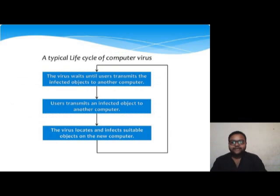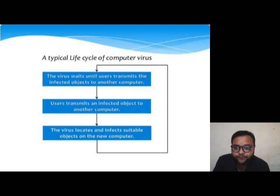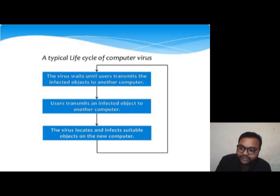A typical life cycle of computer viruses: first, the virus waits until the user transmits the infected object to another computer; second, the user transmits an infected object to another computer; and third, the virus locates and infects suitable objects on the new computer.